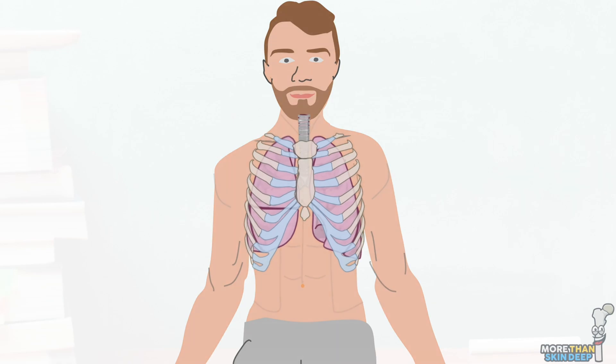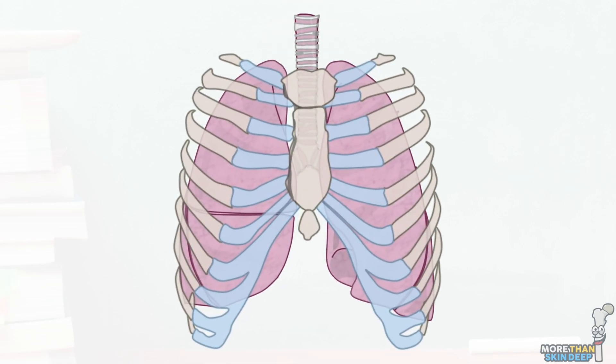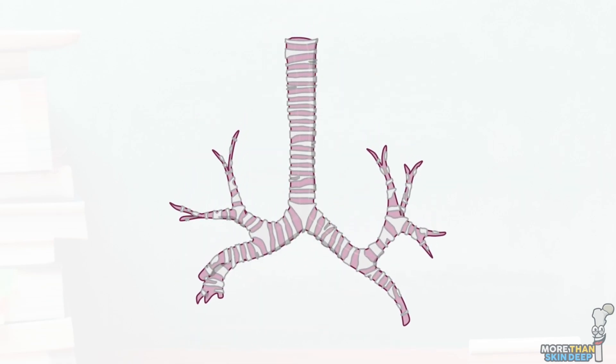The proper name for the branching system of airways that carry air from your mouth to the alveoli of your lungs is the tracheobronchial tree, named after its two major constituents, the upper trachea and the lower bronchi.